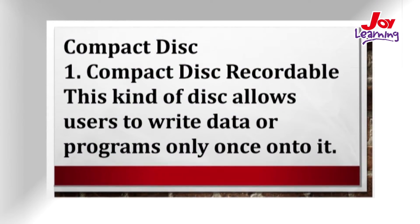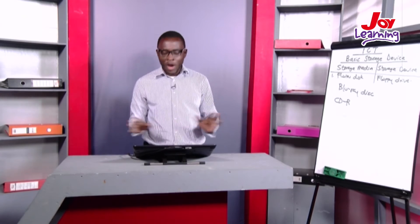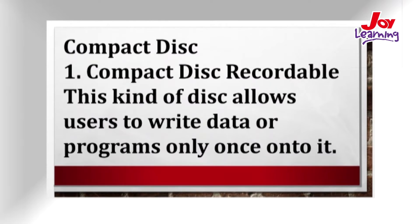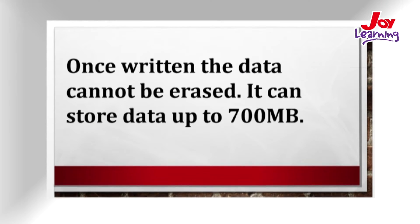The compact disk has components: the CD-R, or compact disk recordable, allows the user to write data onto it only once. Once information is copied onto it, it cannot be altered or changed. It can store data up to 700 megabytes, compared to the floppy disk which only stores up to 1.44 megabytes.